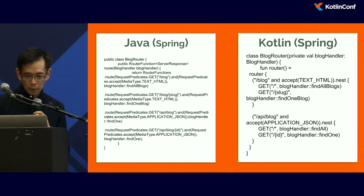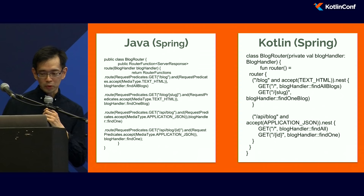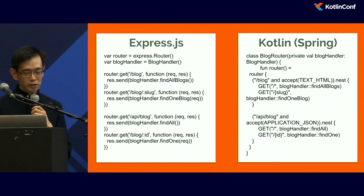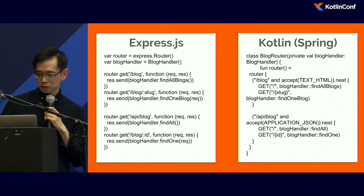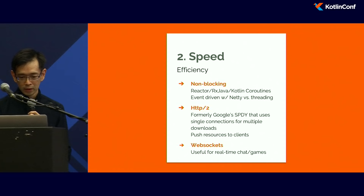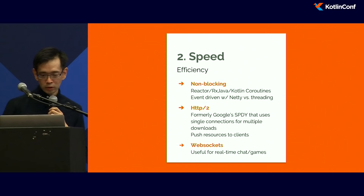For conciseness, the Spring DSL for setting up a REST API is much more verbose in Java and much cleaner in Kotlin — almost the same number of lines as Node.js using the Express.js framework. For speed, look for non-blocking support in the server, including Kotlin Coroutines, Reactor, or RxJava, and having an event-driven web server backend.